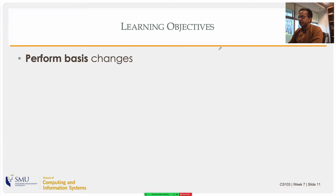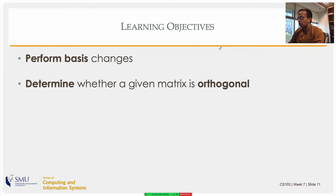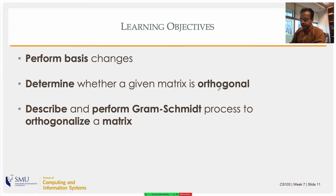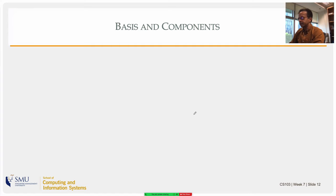Learning objectives for today: we will be looking at basis changes and how we can tell whether a matrix is orthogonal, or whether two vectors are orthogonal to each other. We will describe and perform Gram-Schmidt. We have a special kind of matrix — a full rank square matrix — and you can make it orthogonal using an algorithm called the Gram-Schmidt process.